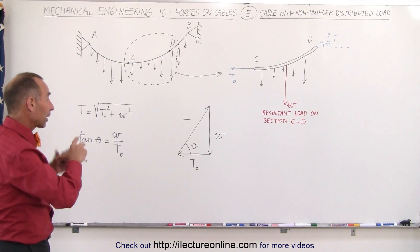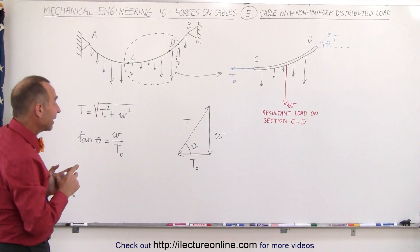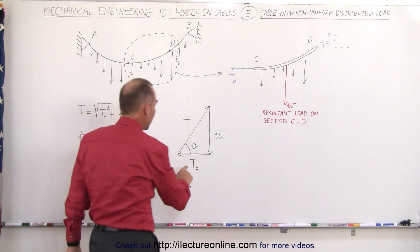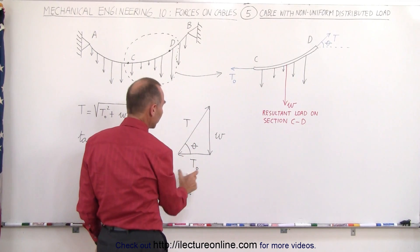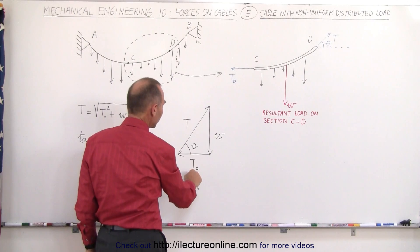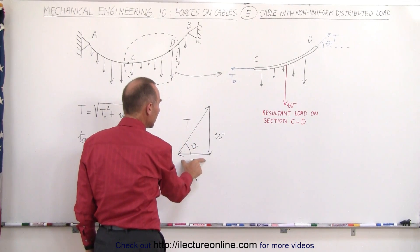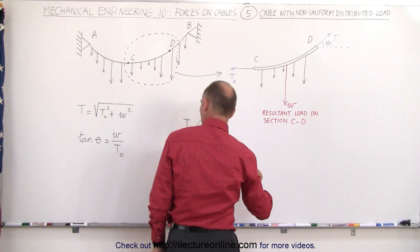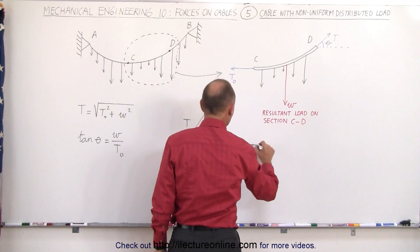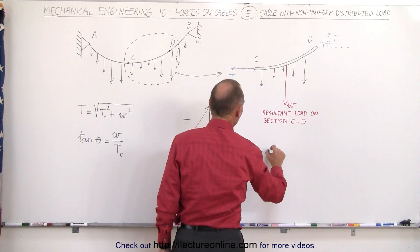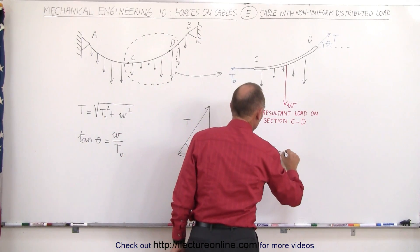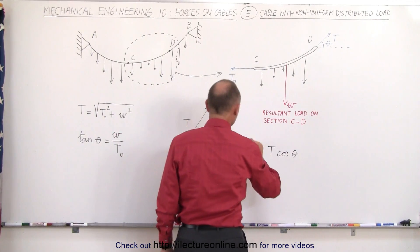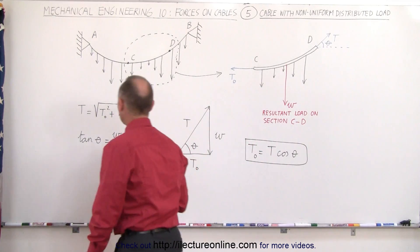A couple more equations you may want to come up with in a situation like this, is we want to be able to maybe express T sub naught in terms of T, or T in terms of T sub naught. It's probably better to express T sub naught in terms of T, because it's one of the legs of the triangle. So we can say that T sub naught is equal to the hypotenuse T times the cosine of the angle, cosine of the angle theta.